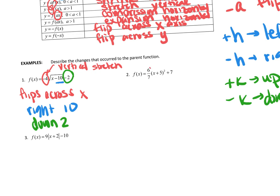Here. This value, less than 1, greater than 0. This is a vertical shrink.